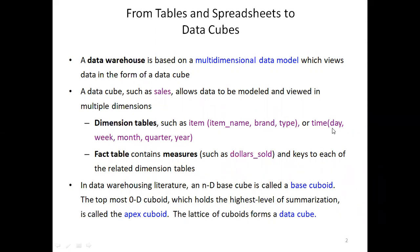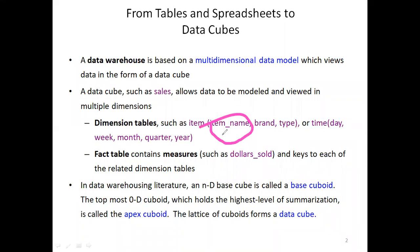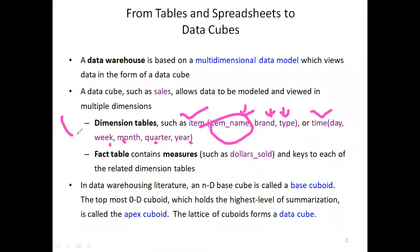For time, the dimensions are day, week, month, quarter, and year. So what are they exactly? Very good — those are our dimensions. For this item, we consider item name, brand, type; and for time, day, week, month, quarter, and year — they are all different dimensions.